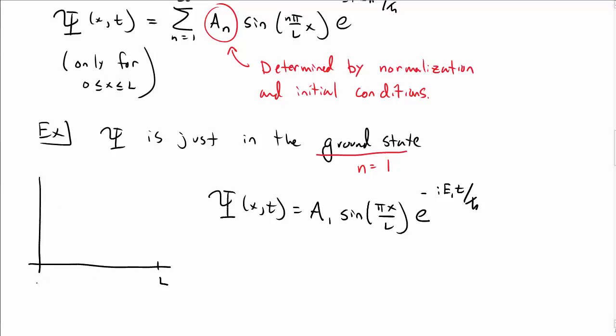What this would look like if we were to plot this between 0 and L is a wave function that just has one bump.